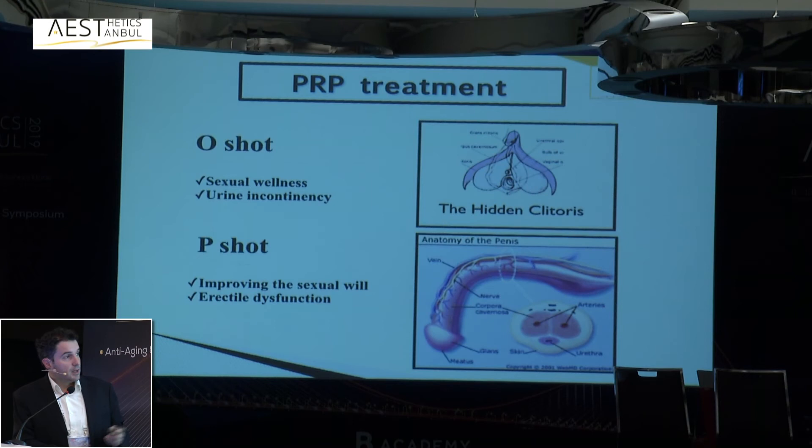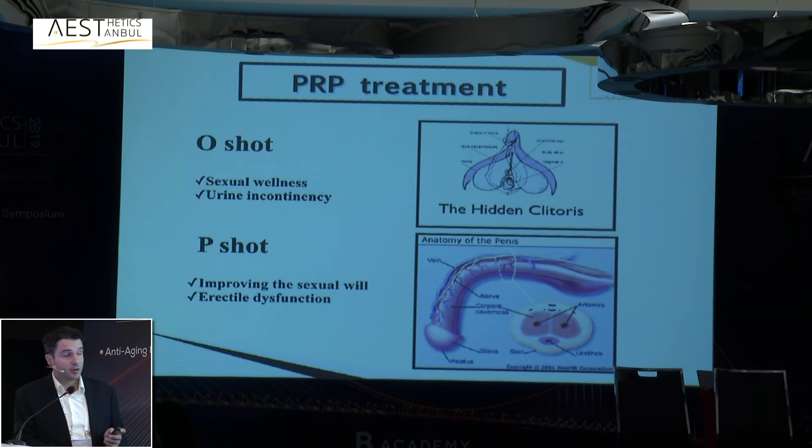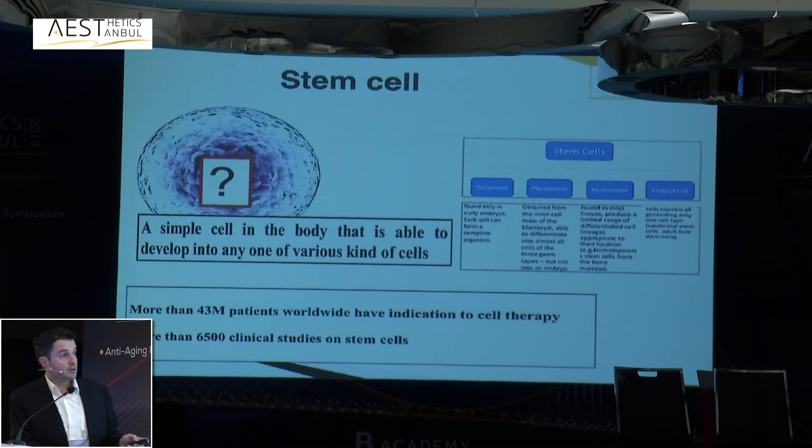We also perform O-shot and P-shot procedures, which will be discussed in a later lecture. I am now also using stem cells for very severe erectile dysfunction in males and urinary incontinence in females. Regarding stem cells, there are several types: totipotent, pluripotent, multipotent, and unipotent.